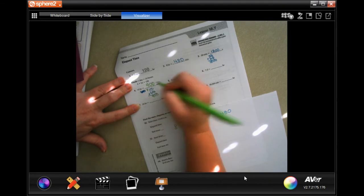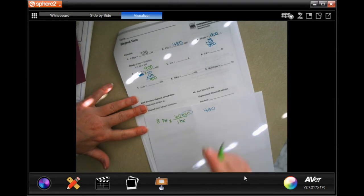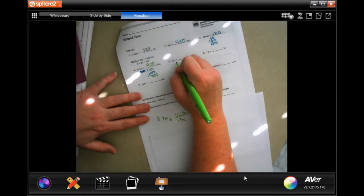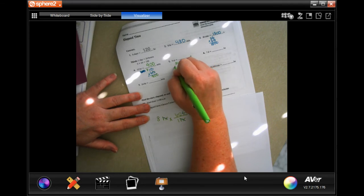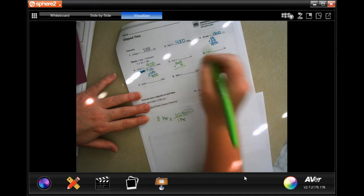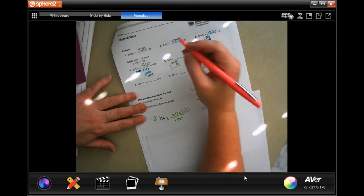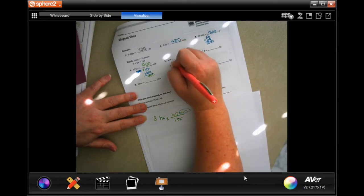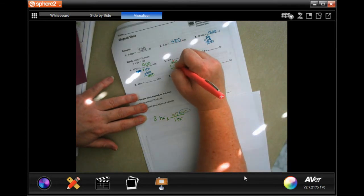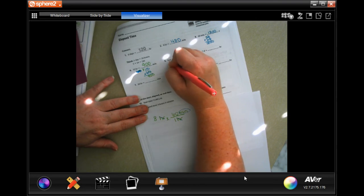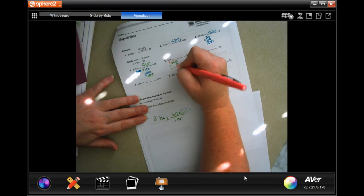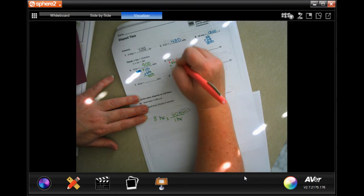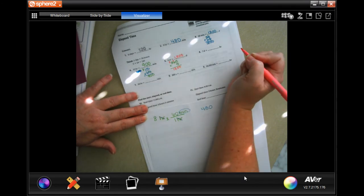5 years is how many days? Well there's 365 days in one year and they want to know about five. 5 times 5 is 25, carry the 2. 5 times 6 is 30 plus 2 is 32, carry the 3. 5 times 3 is 15 plus 3 is 18. 1825 days.